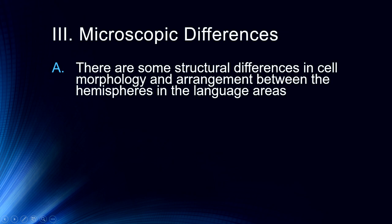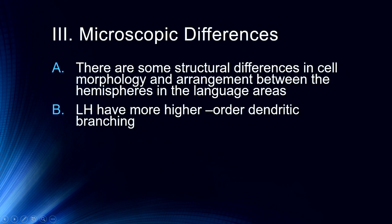There are some microscopic differences — structural differences in cell morphology and arrangement between the hemispheres in the language areas. The left hemisphere has higher-order dendritic branching. When we talk about higher-order dendritic branching, it's like when a branch splits in two, then those two branches split again, and then those split again — those are higher-order branches. It's sort of like the difference between an elm tree and a pine tree: pine trees tend to have only first- and second-order branching, whereas deciduous trees like an elm have more higher-order branching. So there is more dendritic branching in the left hemisphere than in the right.